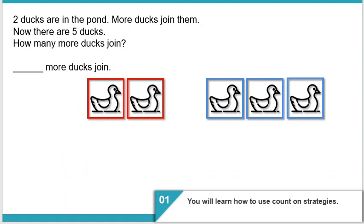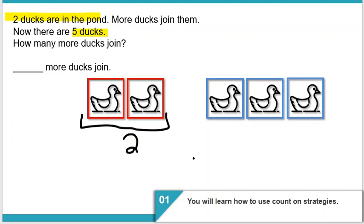Our first problem says there are two ducks in a pond. More ducks join them. Now there are five total ducks. How many more ducks join? So the first thing is we take these two ducks — here we have our two ducks — and then we're going to count on to get to that five, using the addition count on strategy to find out how many more ducks.